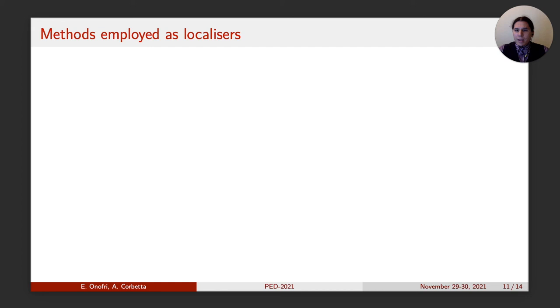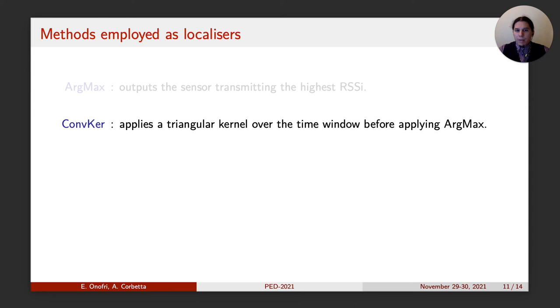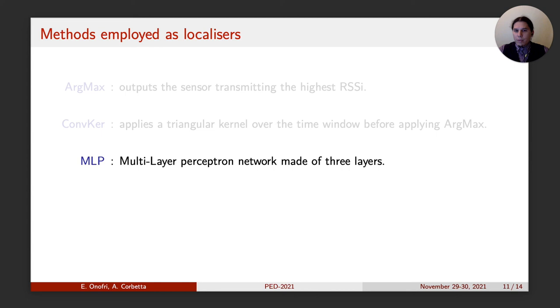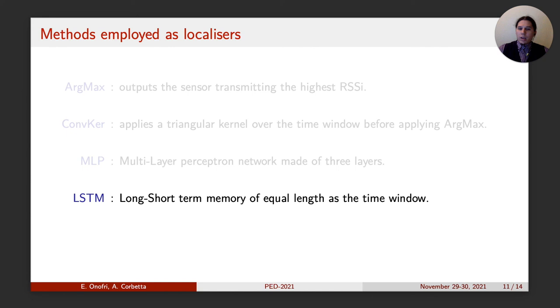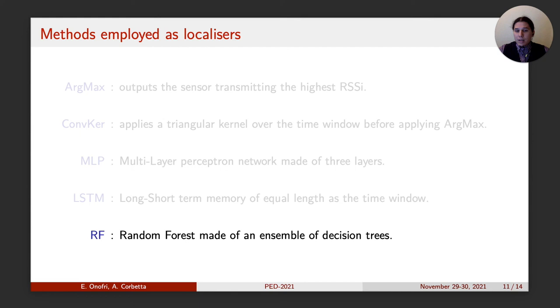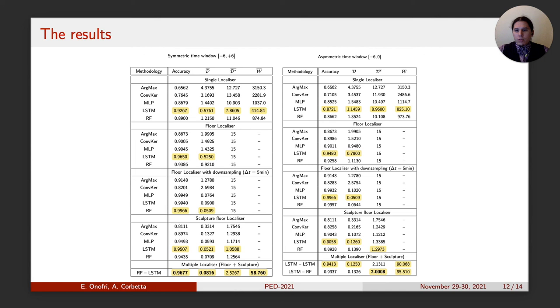As a benchmark, we include the argmax being the simplest classifier as possible, as it outputs the room whose signal is higher time beam by time beam. As a second methodology, we applied the convex kernel, or mobile average, that applies a triangular kernel over a sliding time window before taking the highest signal. Then, we include three autonomous learning techniques that consider signal from a short-time window, in order to classify the beacon's position. Namely, a three-layer neural network, that is, a network made of artificial neurons, a long short-term memory capable of inferred relation in time from data, and a random forest, as an ensemble of simple classifiers called decision trees.